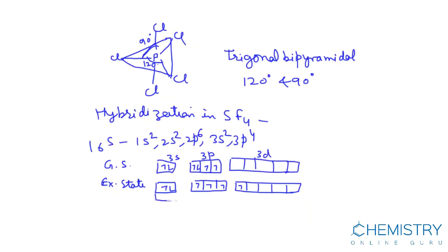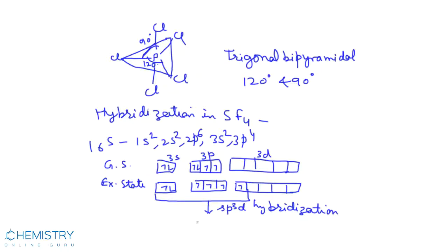These five orbitals, 1s, 3p, and 1d, mix together and form five SP3D hybrid orbitals and hybridization is SP3D. In one hybrid orbital, a paired or lone pair of electrons is present. Due to presence of lone pair, geometry becomes distorted.